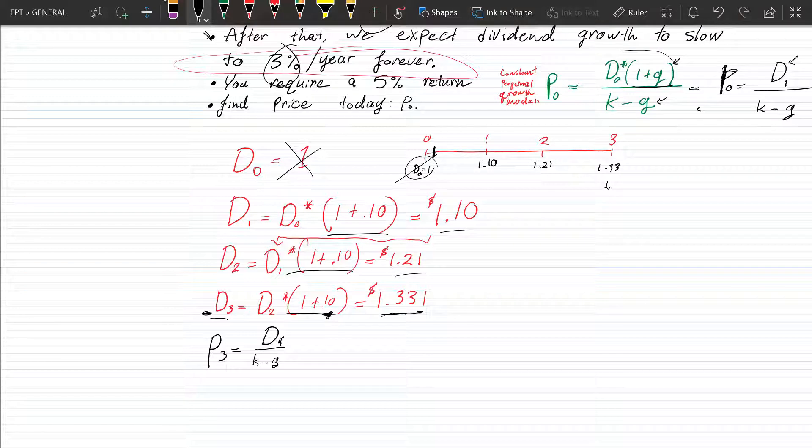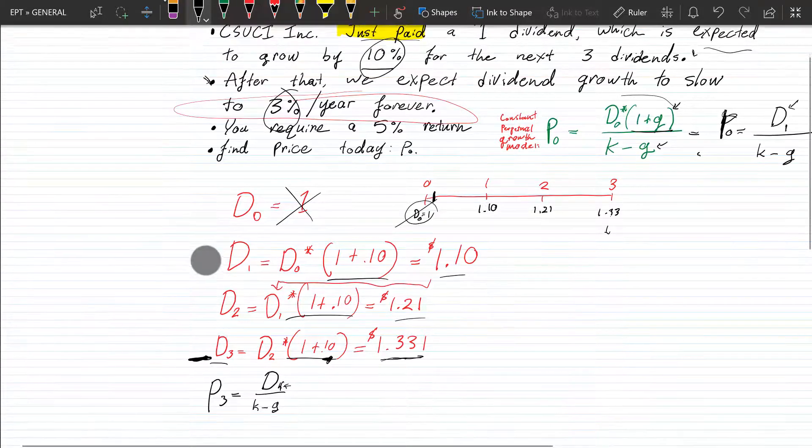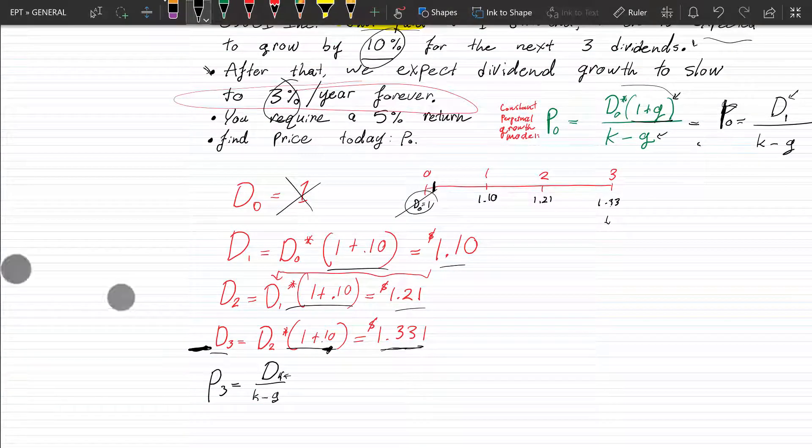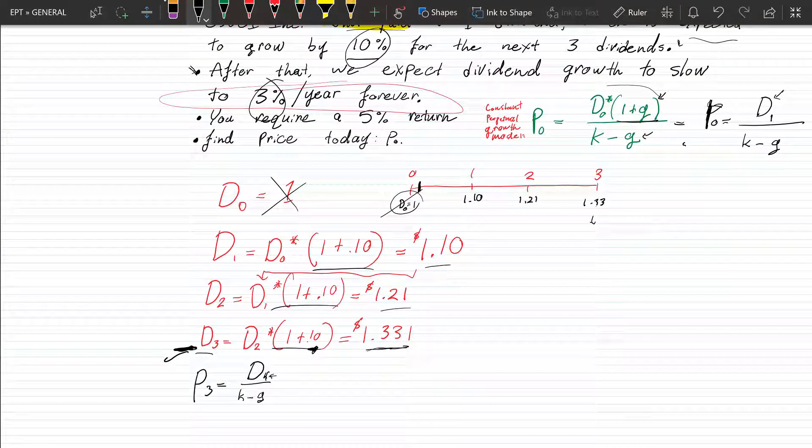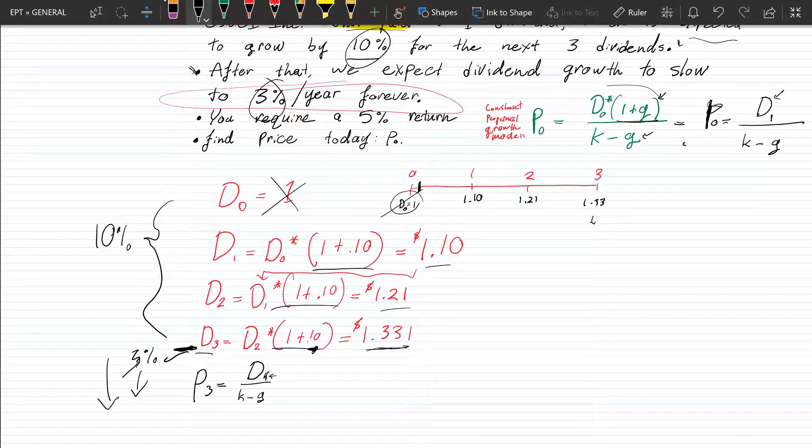even though we're still solving in for the price at period three, we still need to project one dividend ahead. So we need to find D four. Now D four is super easy because we have that new growth rate because that continues on past this point right here. We know that it's going to be 3% down and forever while it was 10% here. It will be 3% forever past year three.